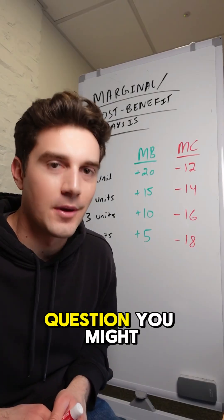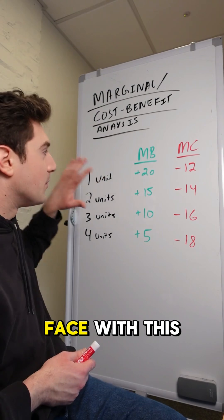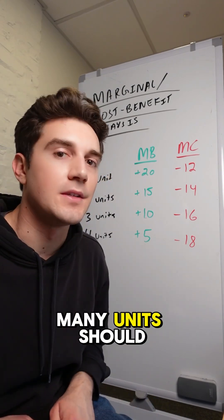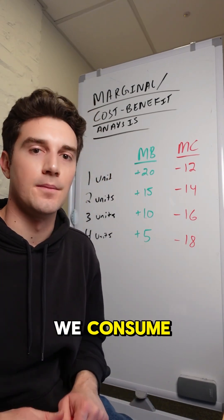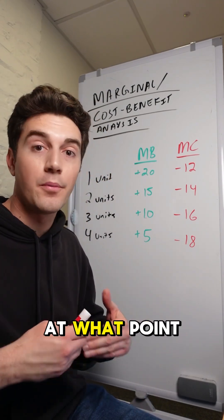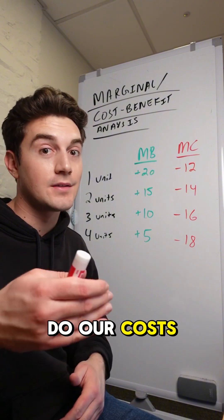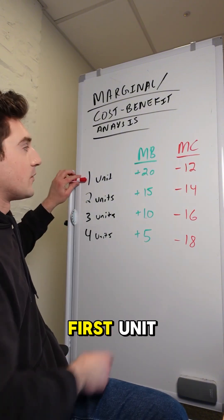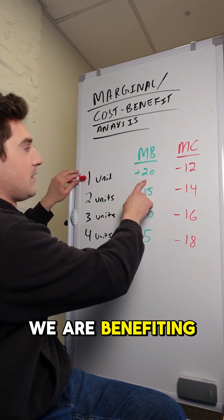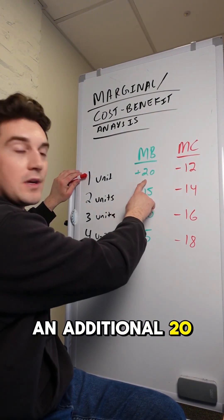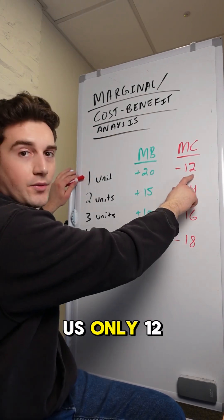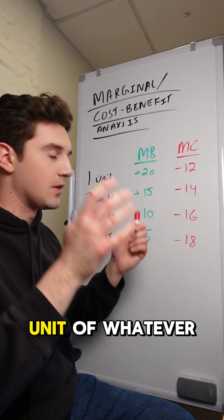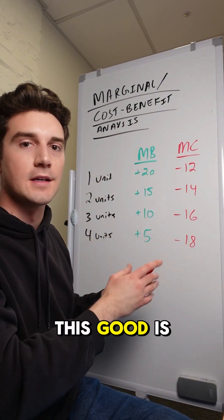Now for a more exam-like question you might face: with a scenario like this one right here, how many units should we consume? All we've got to focus on is at what point do our costs get higher than our benefit. At our first unit, we are benefiting an additional 20 units of happiness and it's costing us only 12, so we're going to consume the first unit of whatever this good is.